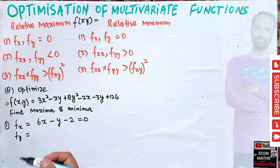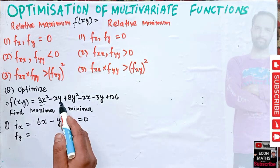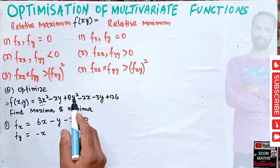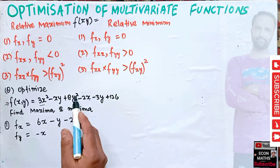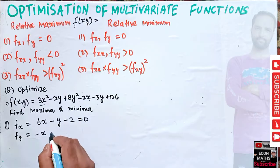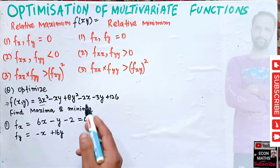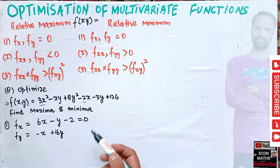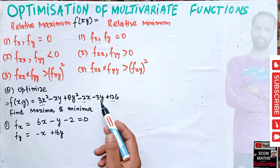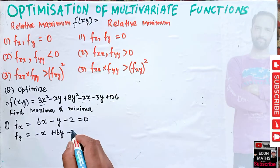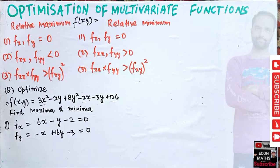Similarly, we find fy by partially differentiating with respect to y. The derivative of xy with respect to y is x, giving minus x. The derivative of y² is 2y, so 8 times 2y gives 16y. The derivative of y is 1, giving minus 3. So fy = -x + 16y - 3 = 0.